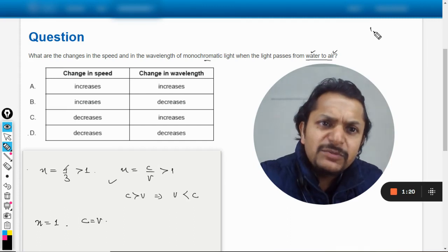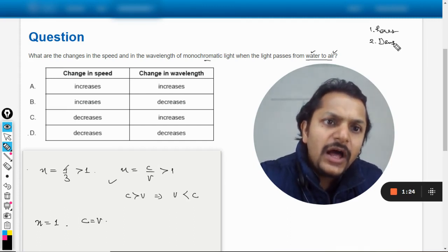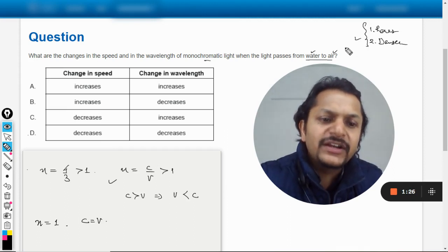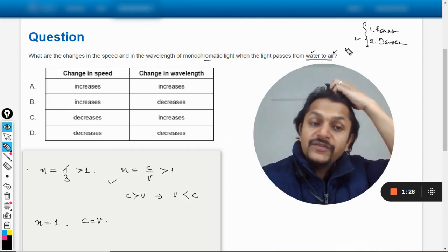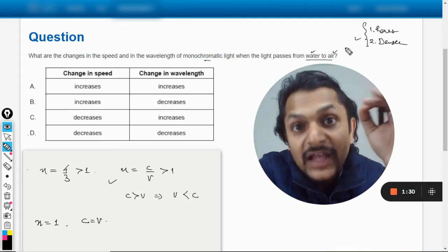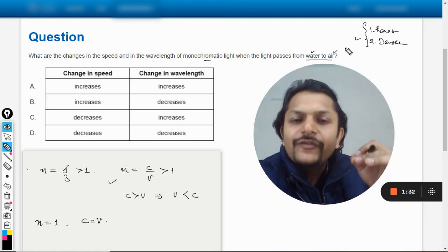And I tell you like we say that this medium is rarer and this medium is denser. Now how are we able to categorize this thing? For this we have to first find the velocity of the light. If the velocity of light is more...